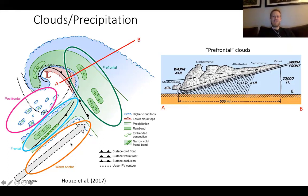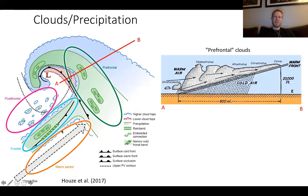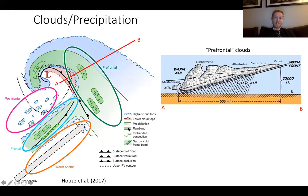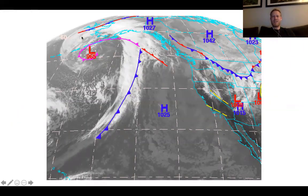Atmospheric rivers occur in the warm sector after the warm front is lifted. Here's the cold front — it usually has banded precipitation that's narrow and intense. And if you live in western Washington or near the coast, you're familiar with post-frontal precipitation, which is usually cellular and more convective due to colder air aloft moving over the relatively warmer temperatures of the Pacific Ocean.